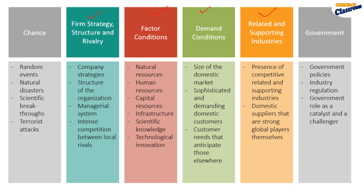Firm strategy, structure and rivalry covers the company's strategy, organizational structure, and managerial systems, along with intense competition between local rivals. Government policies include industry regulation and the government's role as a catalyst and challenger, providing industry support and regulations.